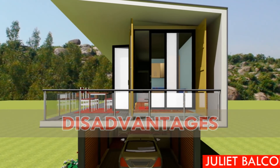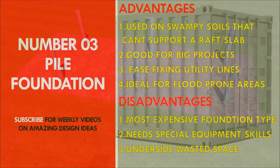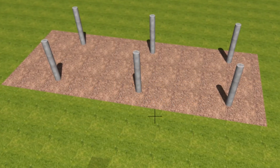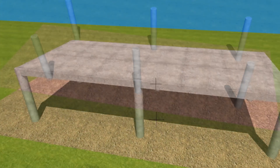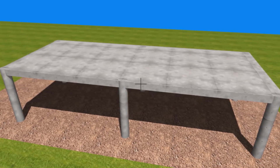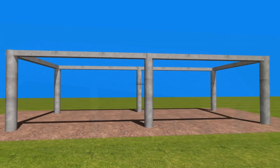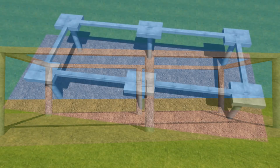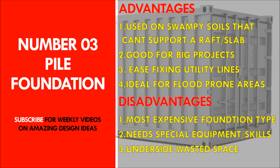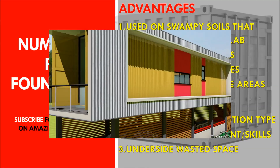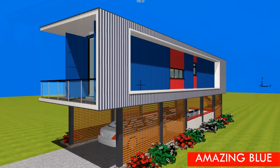The disadvantages: this type of foundation is the most expensive you can use for your shipping container house project, because it requires specialized equipment and skills to execute. Once the piles are in, you still need to cover them using a reinforced concrete slab, reinforced concrete beams, or reinforced concrete pads. Another disadvantage is that the underside space is generally wasted space, so you have to be creative about how to use it.